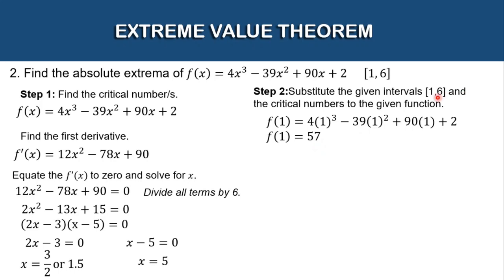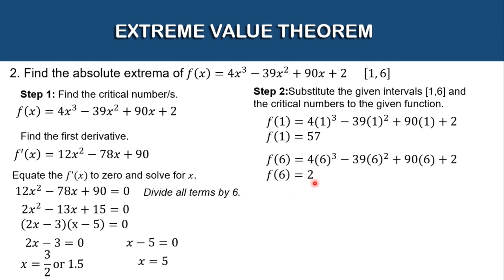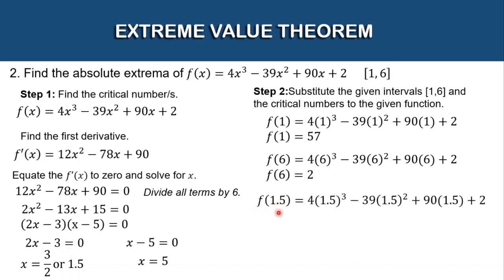For our second value, substituting x = 6: f(6) = 4(6³) − 39(6²) + 90(6) + 2. Simplifying, the answer is 2. For the third value, substituting x = 1.5: f(1.5) = 4(1.5³) − 39(1.5²) + 90(1.5) + 2. Simplifying, the answer is 62.75.